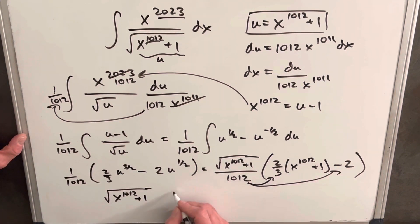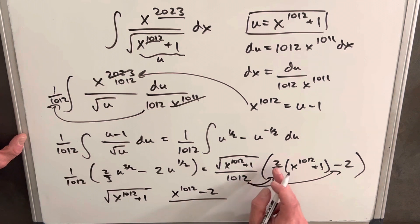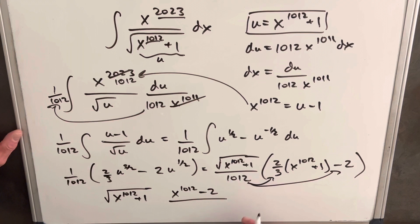Then we're going to have this whole thing is going to simplify to x^1012 minus two, over when you do this out. When you... so if you, two over 1012 is 1 over 506, 506 times three is going to be 1518.